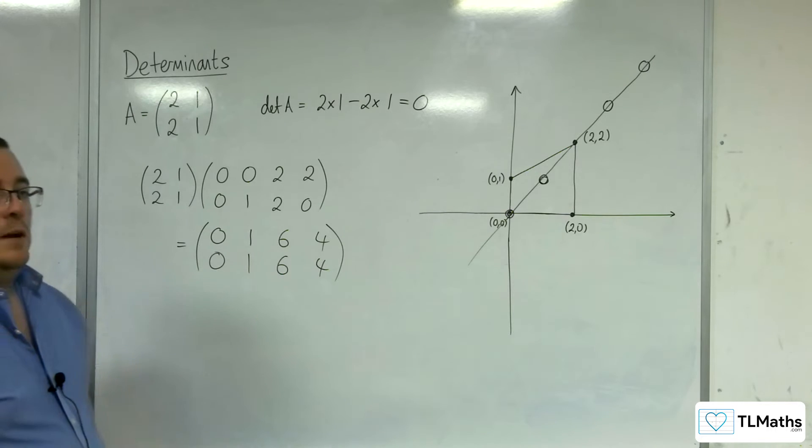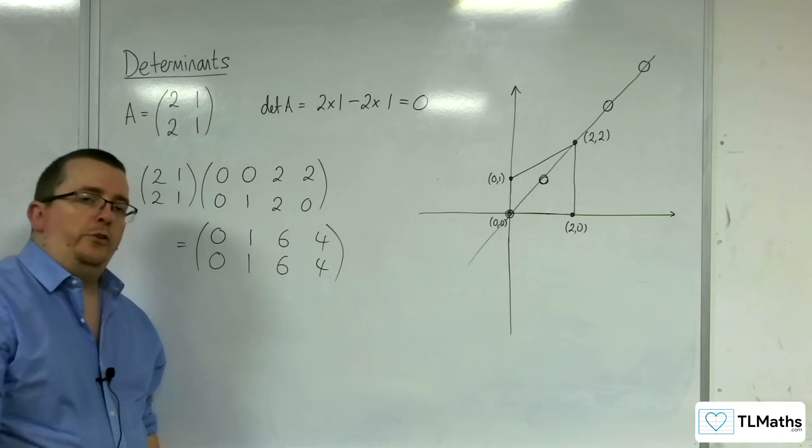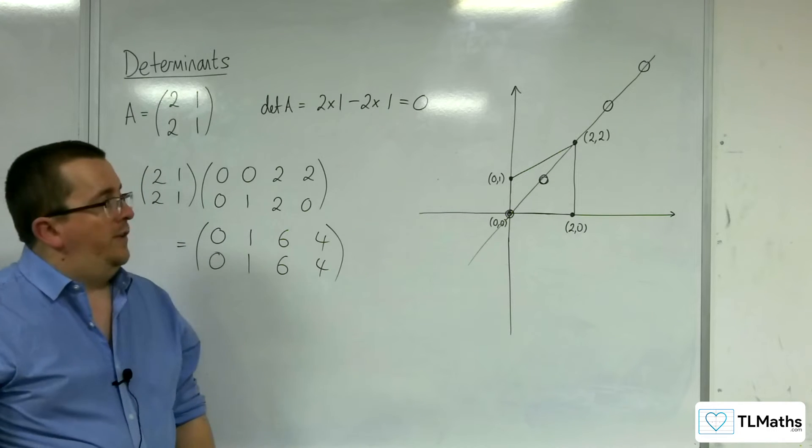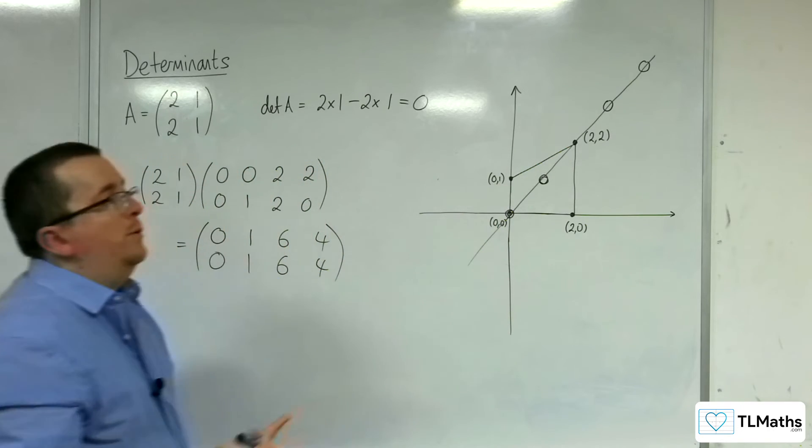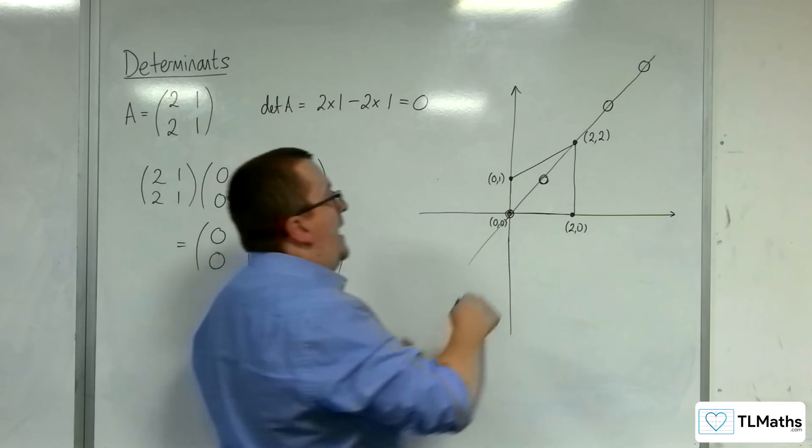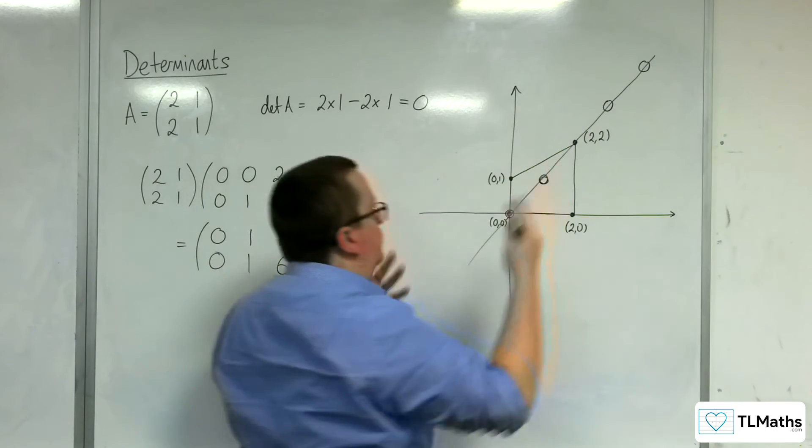And we know how the determinant of a matrix relates back to the area scale factor. So the area of the original shape has been multiplied by 0, effectively. And so the area, as you can see, would now be 0.